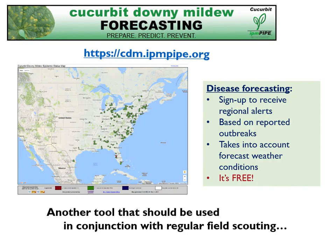Cucurbit growers and scouts are encouraged to report the occurrence of downy mildew using the IPM Pipe website, which will send out disease alerts based on reported outbreaks and forecasted weather conditions. Registration is free, and alerts are sent as either an email or text message.